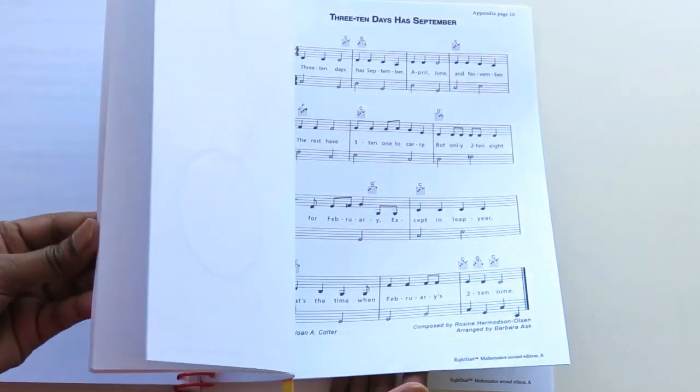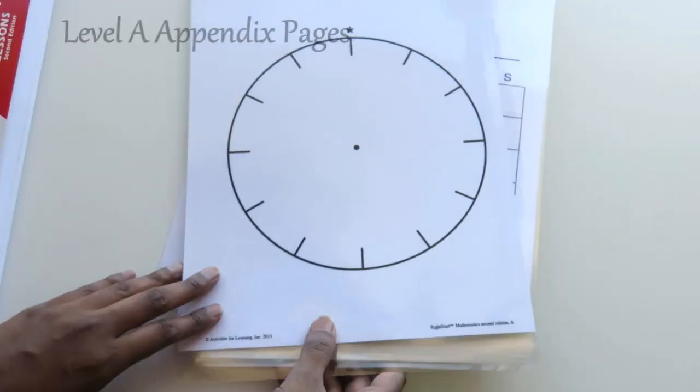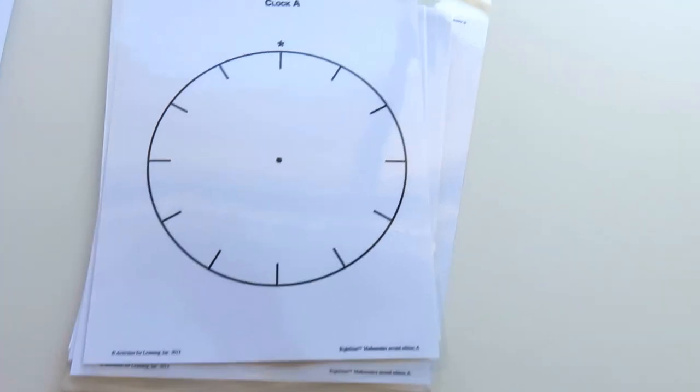At the back of the book you have the appendix where there are materials that you need to do the lessons. These pages also come in loose leaf form printed on cardstock. As always I laminate mine to make them last longer.